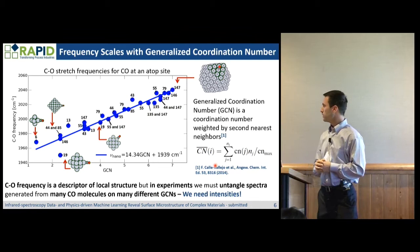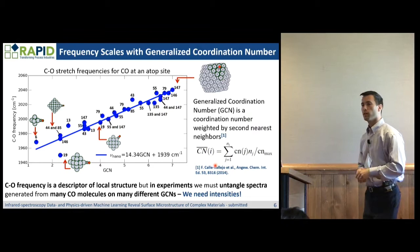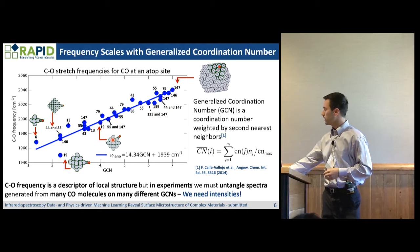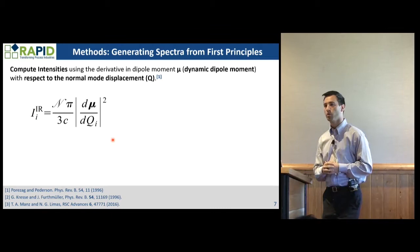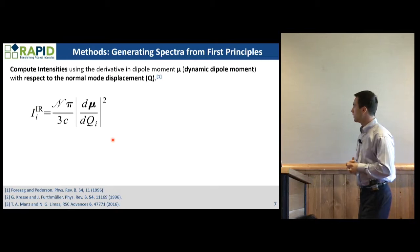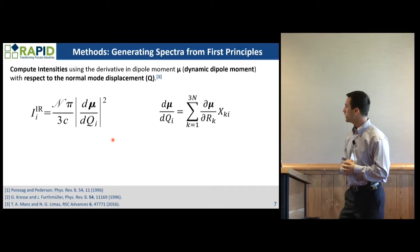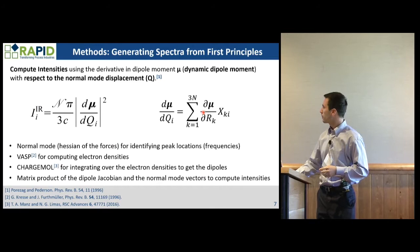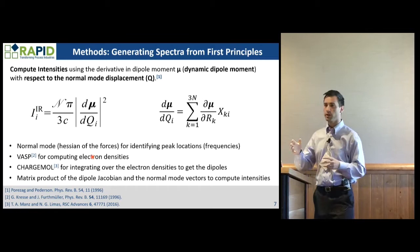If we're trying to measure concentration — the percent of occupied sites or the number of occupied sites — we also need intensities, which correspond to each of the frequencies for CO absorbed at these different sites. Intensity is a function of the dynamic dipole moment, which is essentially the shift in dipole as you shift along the normal mode coordinate for vibration. We compute it by using the normal modes and multiplying the normal mode vectors by the dipole Jacobian. These normal mode vectors are computed using a standard Hessian of forces. We use VASP for computing electron densities, and Chargemol to integrate over electron densities to get the dipoles — that's going to be important in our future work.